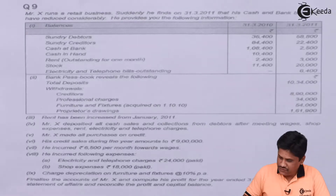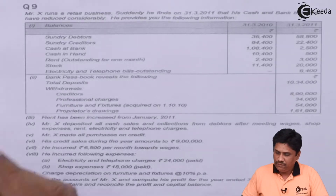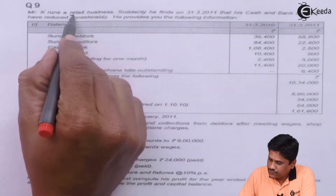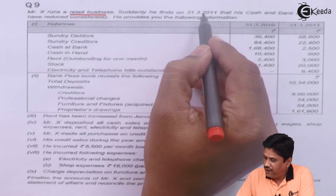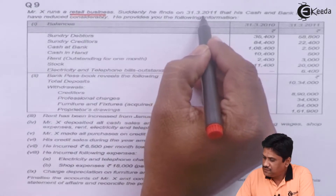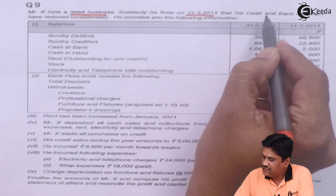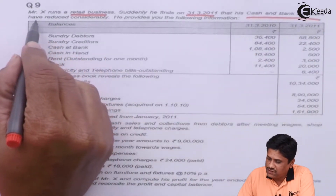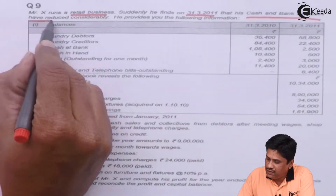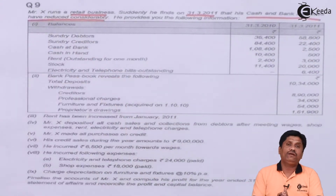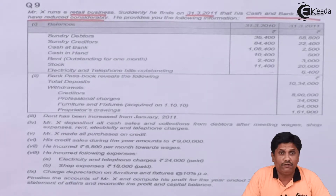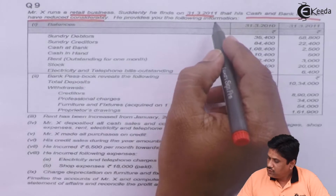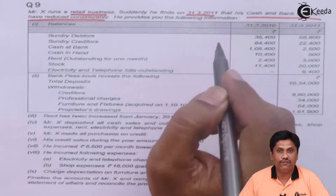Students, let's read the question. Mr. X runs a retail business. Suddenly he finds on 31st March 2011 that his cash and bank balances have reduced considerably. He feels that the cash balance has reduced considerably — it is a matter of worry. We need to worry on that. So he provides you the following information.